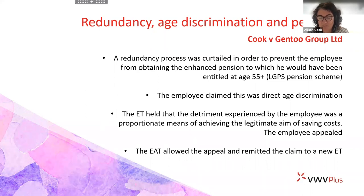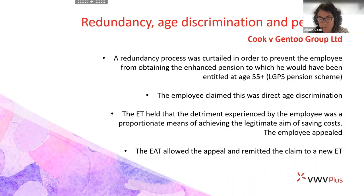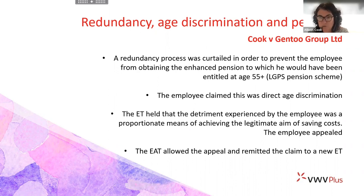Mr. Cook appealed to the EAT, the Employment Appeal Tribunal, and they upheld his appeal. They considered that the tribunal hadn't explained why the detrimental treatment was a proportionate means of achieving a legitimate aim. The tribunal then identified the employer's aim as being to save pension costs, and said the detriment to Mr. Cook would have been proportionate in light of other payments he received — redundancy pay and notice pay amounting to £47,000. The EAT wasn't convinced by this and has remitted the claim back to a newly constituted tribunal for reconsideration.